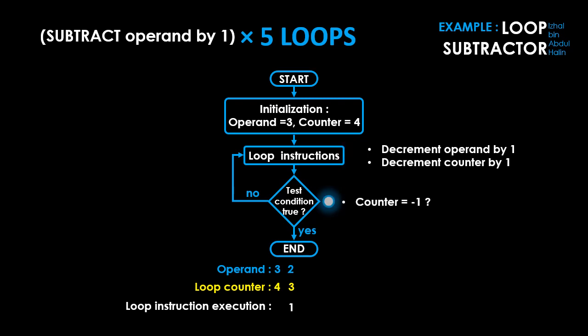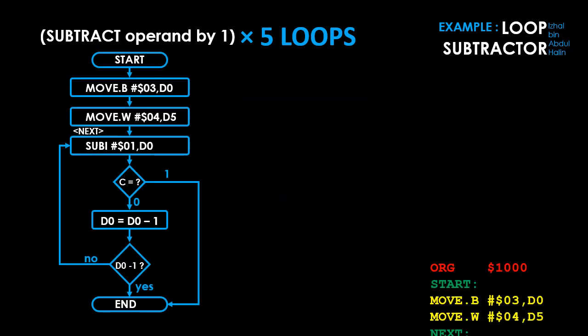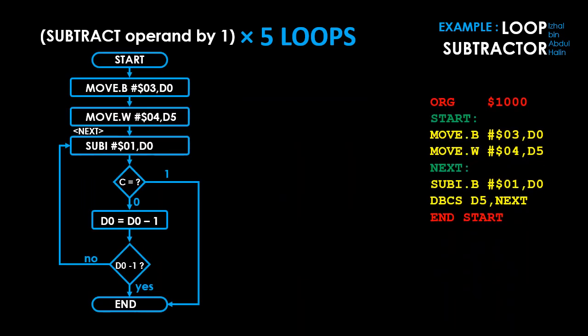The decision-making step checks whether the loop counter is equal to negative 1 or not. If not, the program branches back to execute the loop instructions again, subtracting from the operand and counter each repetition. This continues until the loop counter equals negative 1, at which point the operand is negative 2 and the loop has repeated 5 times. The test condition becomes true and the program ends.